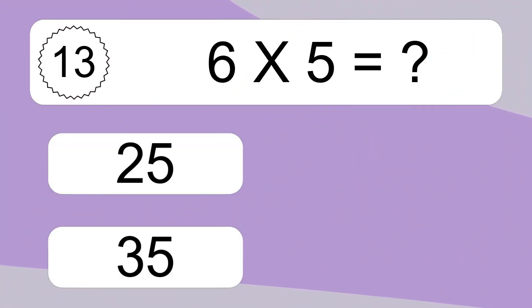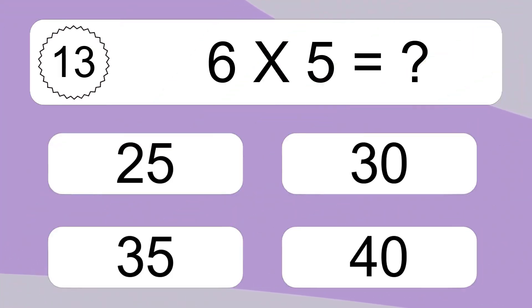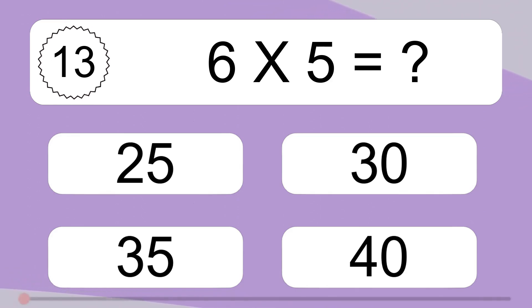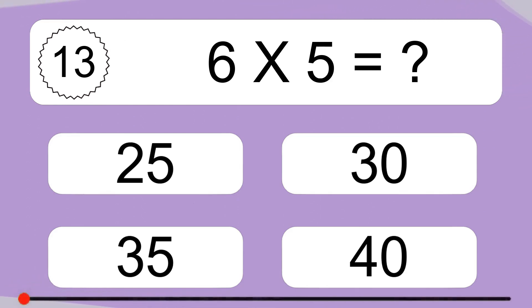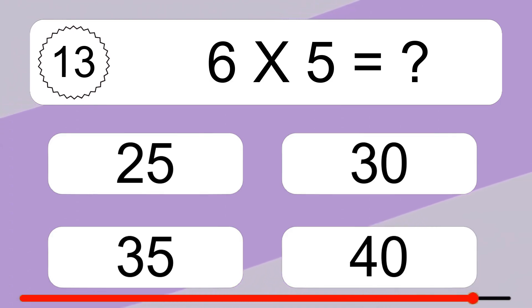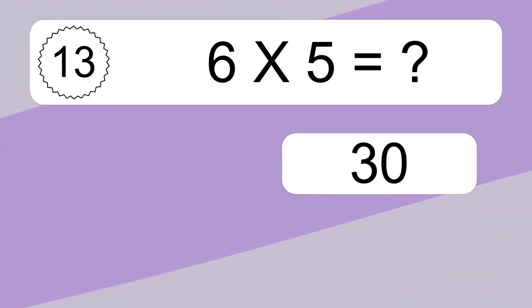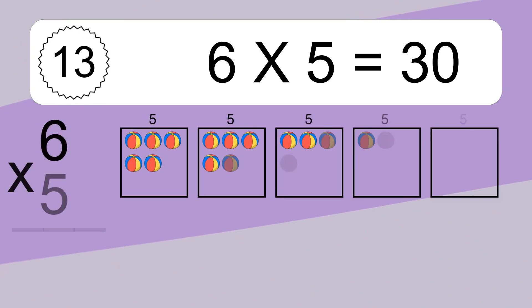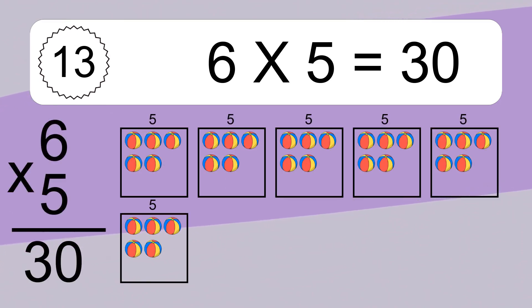6 times 5 equals what? 6 times 5 equals 30.